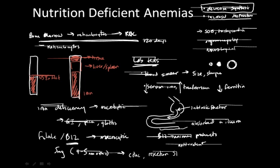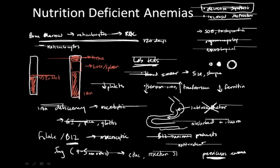B12 deficiency can also result in pernicious anemia — 'pernicious' meaning dangerous — because if you have an autoimmune disorder in which intrinsic factor is no longer being synthesized, no matter how much oral B12 is given, it won't be absorbed. Lab signs for folate and B12 deficiencies include a decrease in the number of platelets and an increase in hypersegmented neutrophils, as well as clinical signs such as mouth sores. B12 deficiency in particular is associated with neurological signs such as paresthesias, numbness, and altered mental status.